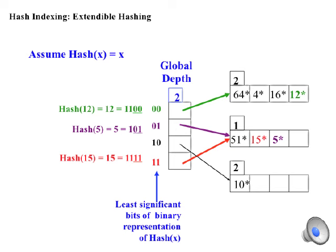while 5 hashes to 0, 1, with a pointer to the second or middle bin. Notice that decimal 15 hashes to 1, 1, which also points to the second or middle bin.